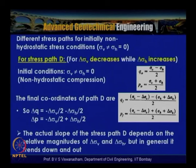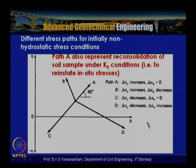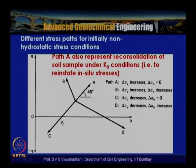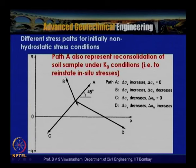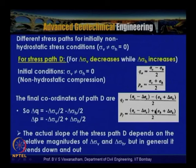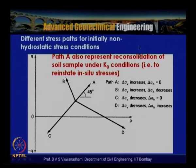For stress path D, Δσv decreases while Δσh increases. For path C, Δσv decreases and Δσh = 0, which is also inclined at 45 degrees. When Δσv increases and Δσh decreases we get a stress path in the opposite direction. For path D specifically: Δσv decreases and Δσh increases.